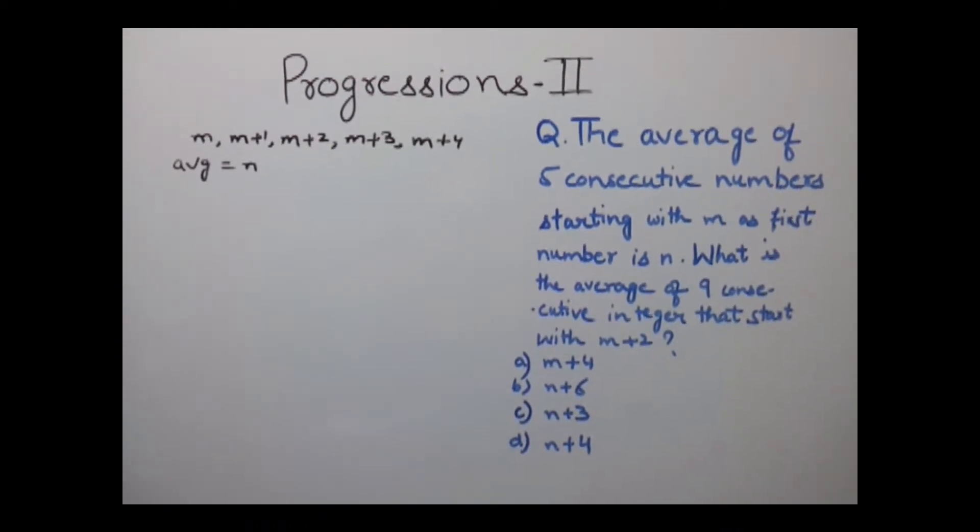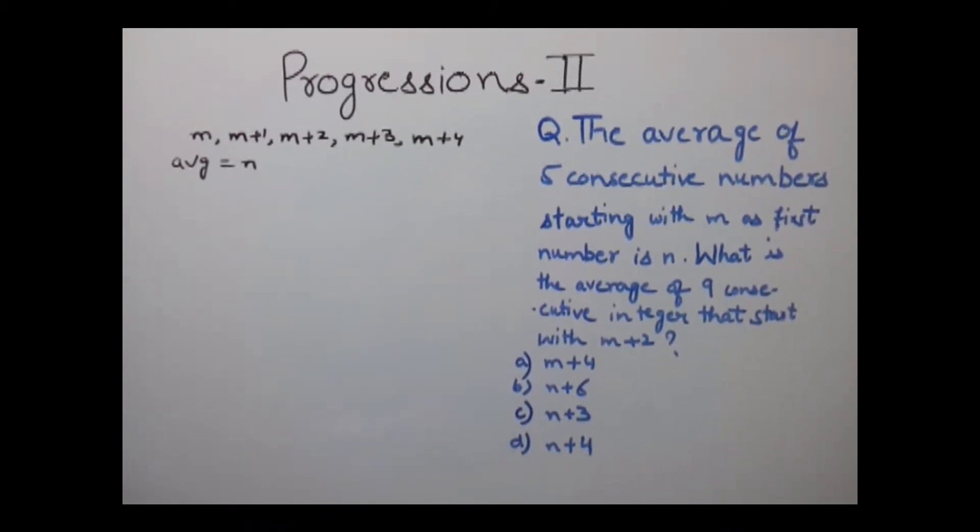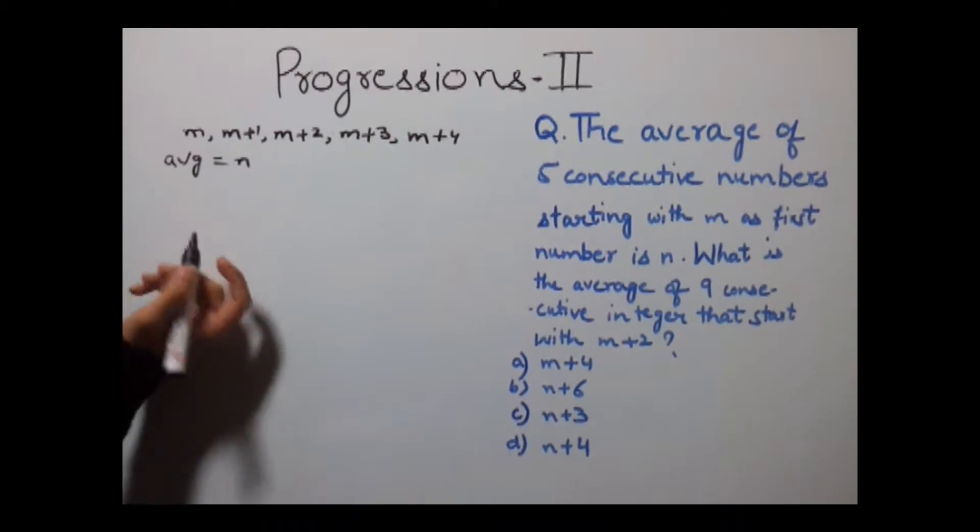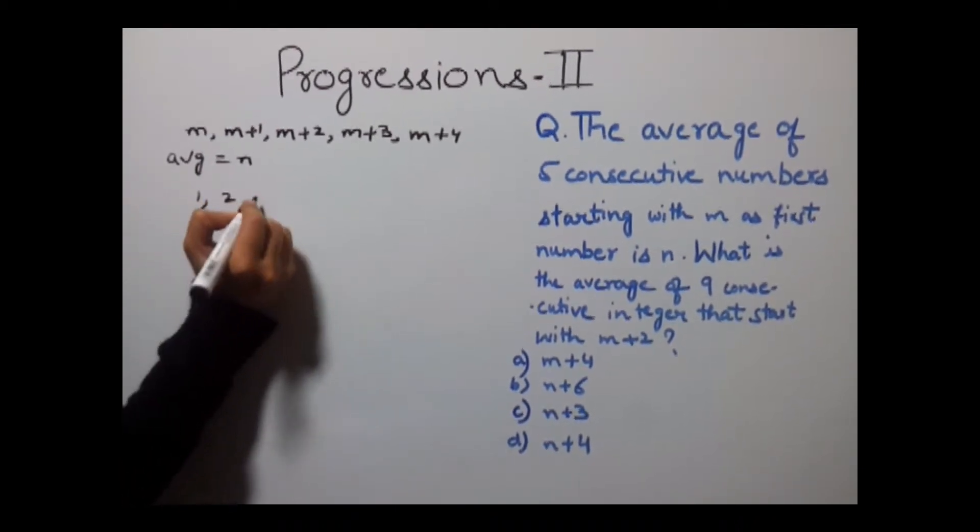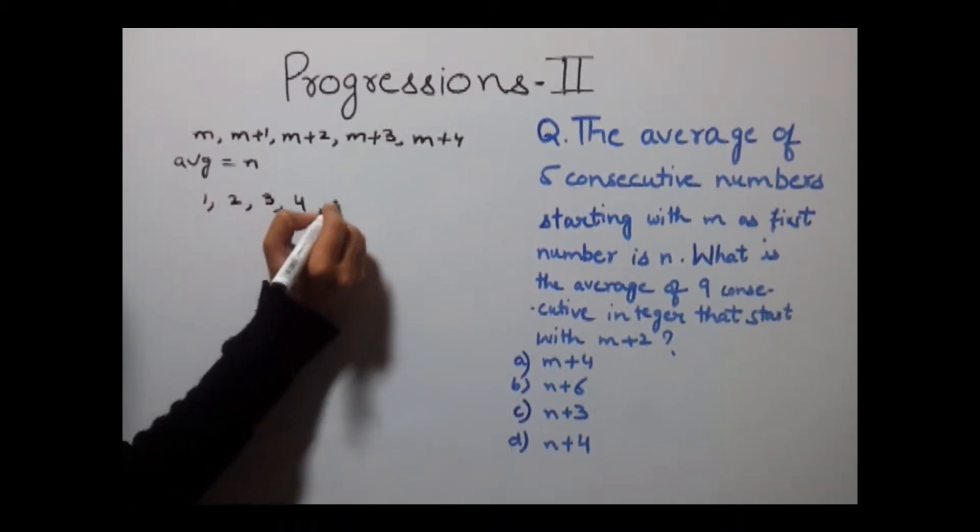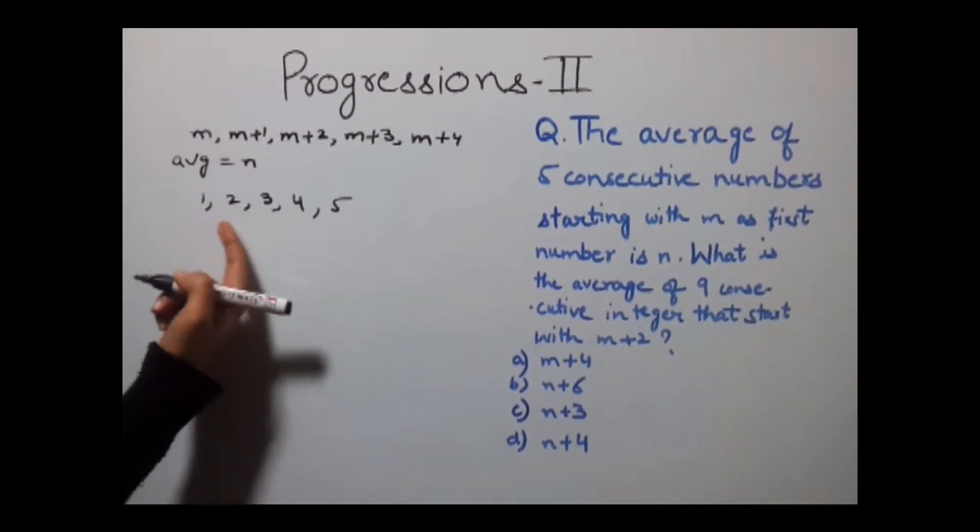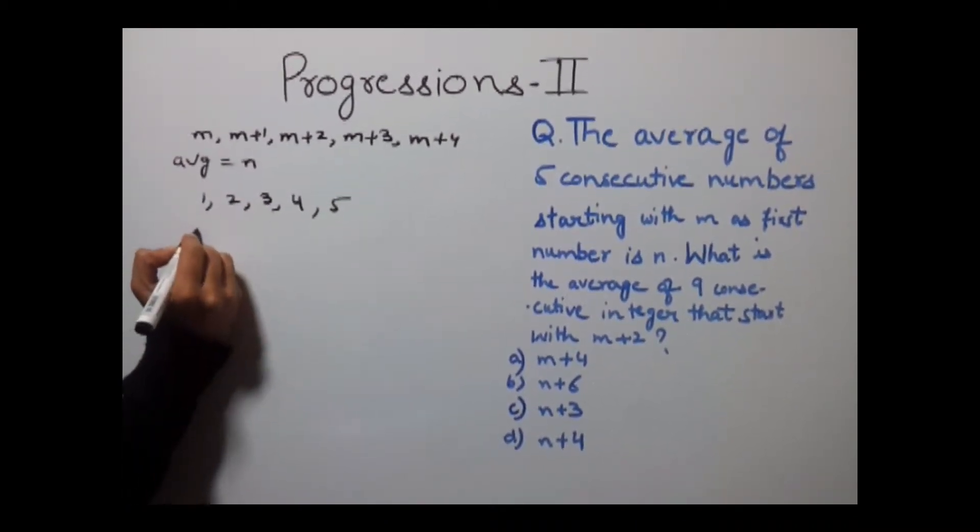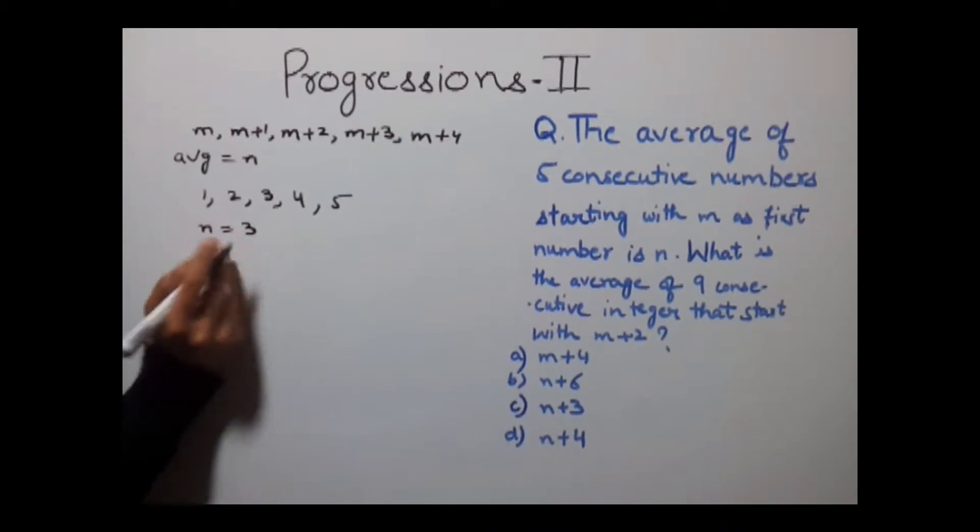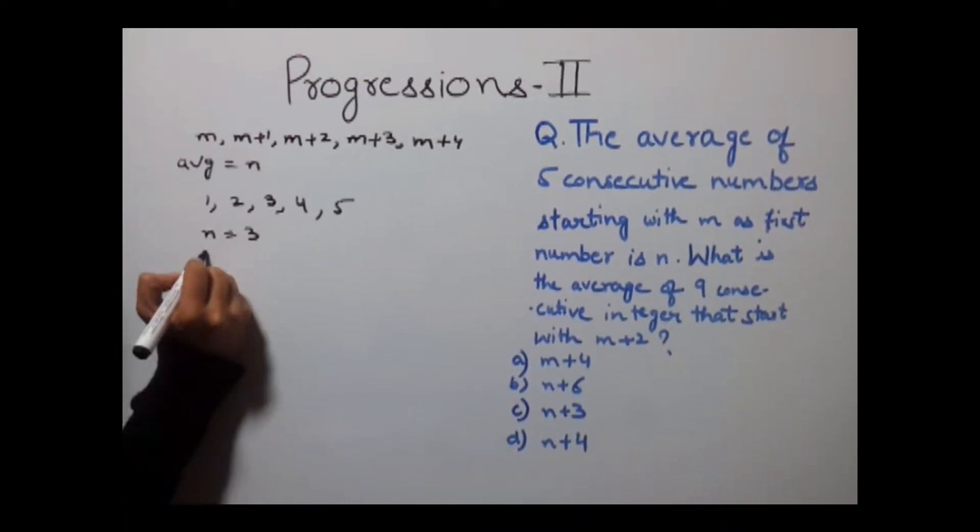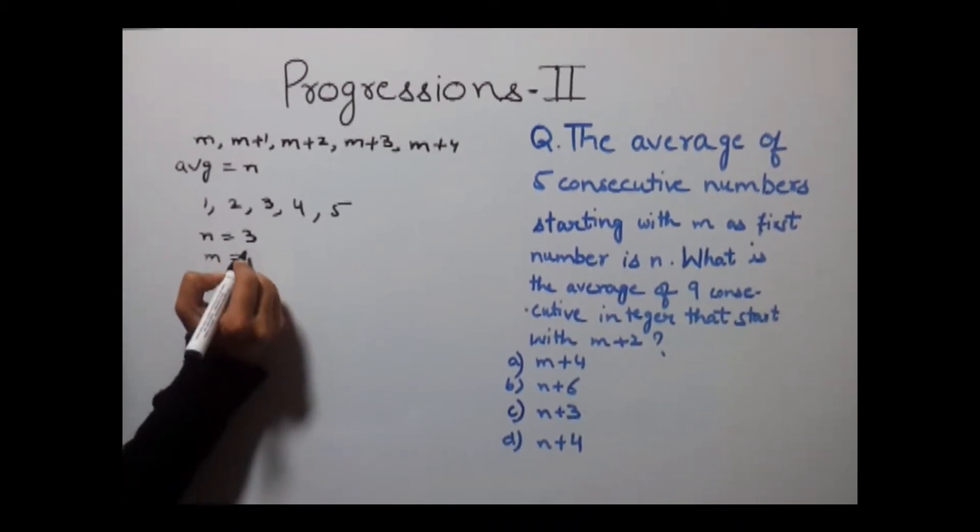Now to solve this type of question, simply assume you have 5 numbers. Say we have numbers 1, 2, 3, 4, and 5, and the average of these numbers would be 3. So the value of n equals 3 and the value of m equals 1.